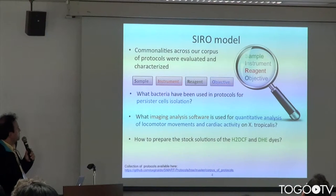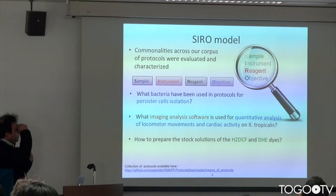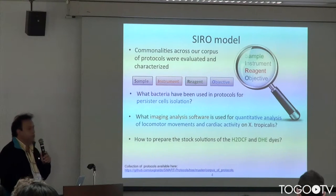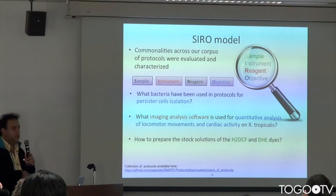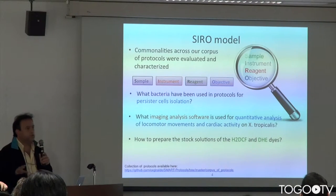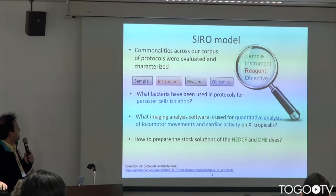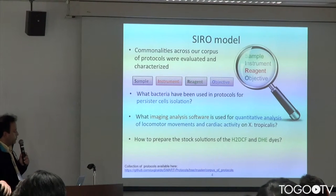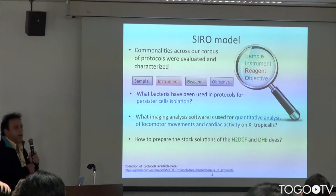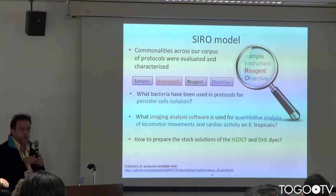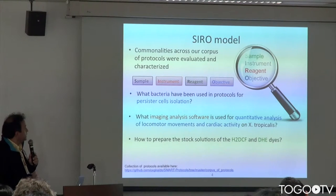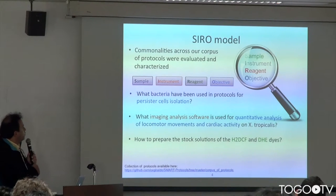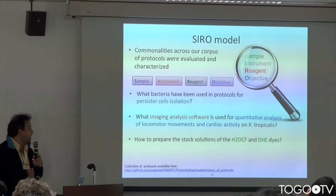By having those four elements as common data elements across our corpus of documents, we realized that we were dealing with a case similar to the one posed by the PICO model — the Population, Intervention, Comparison, and Outcome model, widely used to frame queries in the clinical domain. So we came up with the SIRO model: Sample, Instrument, Region, and Objective. We thought it was going to be a simple task of named entity recognition, but it proved not easy because the ontologies were incomplete — they didn't explicitly know what was an instrument and what was a region, and discovering the objective proved to be very, very difficult.